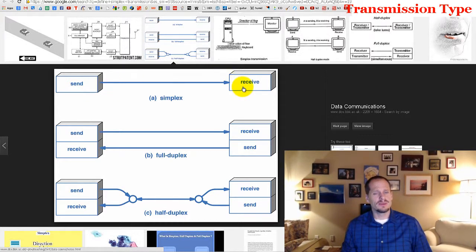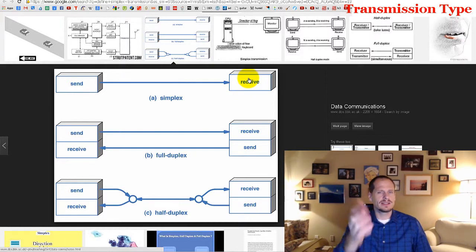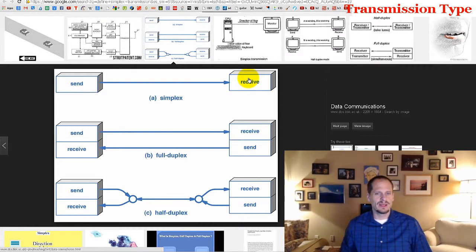We could have simplex communication, which means data can only go one direction. It could only go from the sender to the receiver, and that never changes. So right here is an example of simplex communication, because I am communicating with you, and there's no way for you to video communicate right back with me right now.